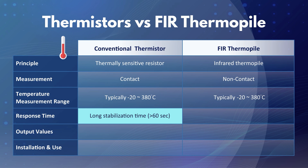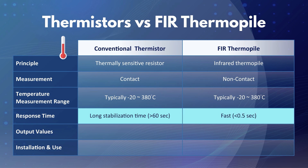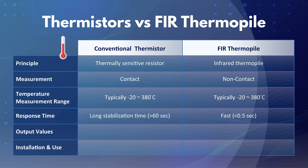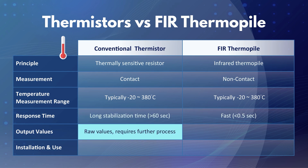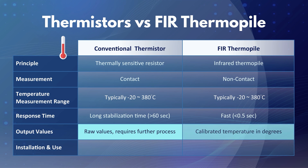Conversely, the FIR thermopile can respond rapidly to temperature changes in less than 0.5 seconds and accurately acquire the target object's temperature. Conventional thermistors provide raw resistance or voltage values as output, which require additional processing to convert into temperature readings. FIR thermopiles, in contrast, deliver calibrated temperature values in degrees directly without additional calculations on the host side.